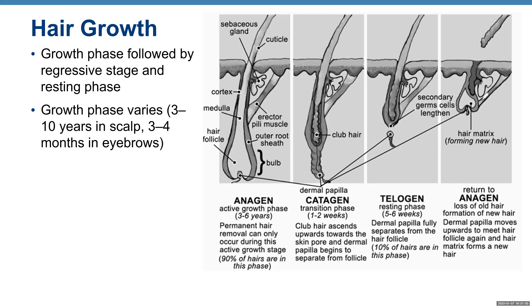Then in anagen — return to anagen — there is loss of old hair and formation of new hair. The dermal papilla moves upwards to meet the hair follicle again, and the hair matrix forms a new hair. This is how your hair grows.